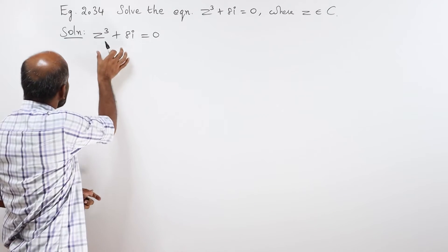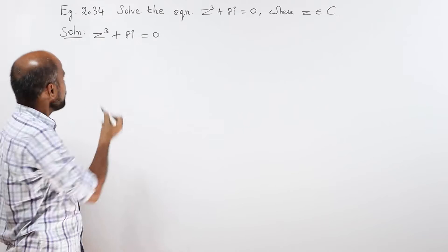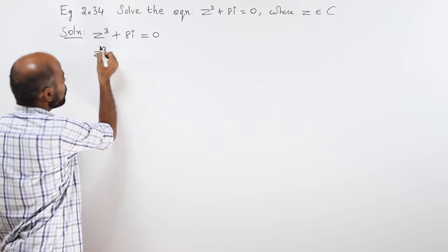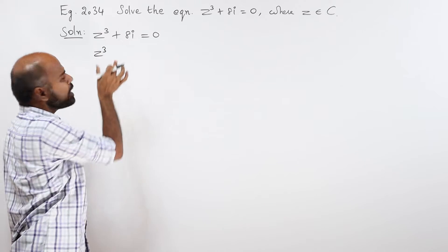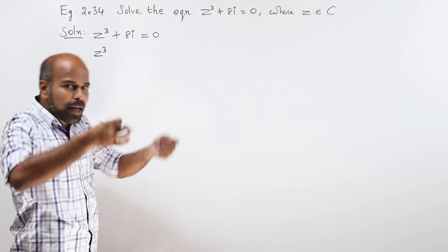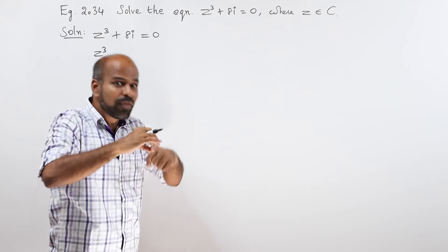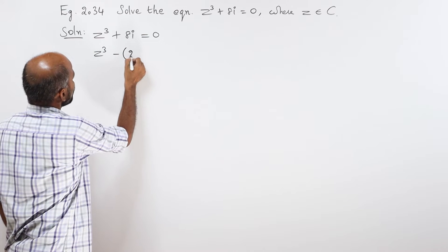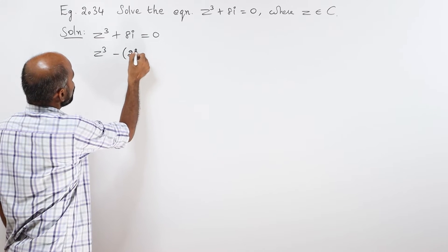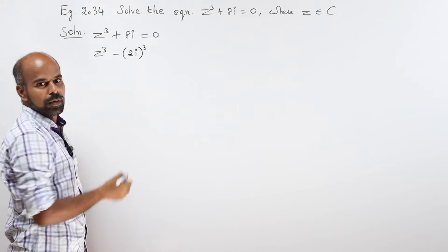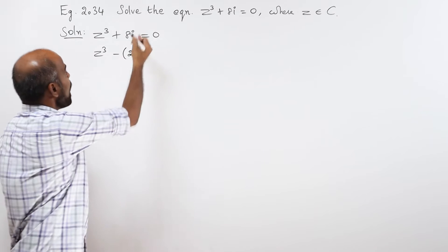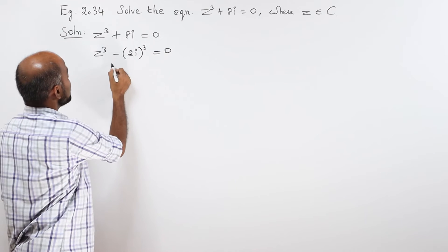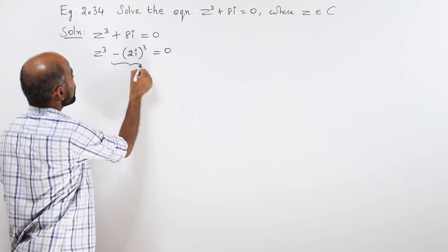Listen to the first step very carefully. We can write z cube plus 8i in another format: minus of 2i the whole cube, that is equal to 0. So z cube minus of negative 2i the whole cube equals 0.